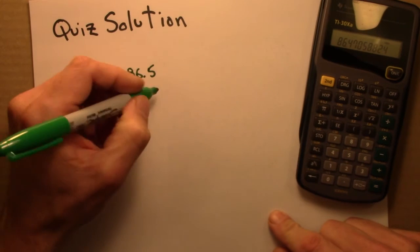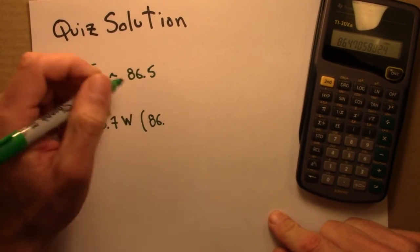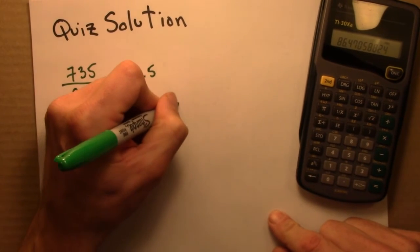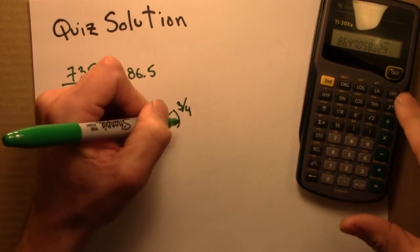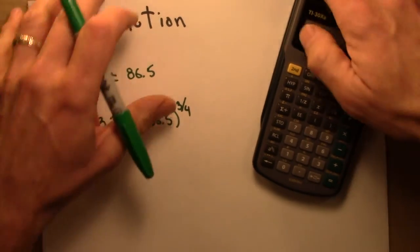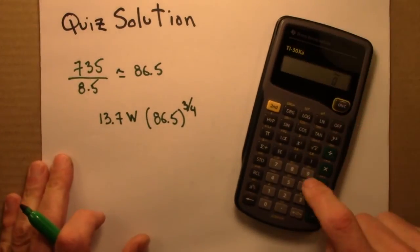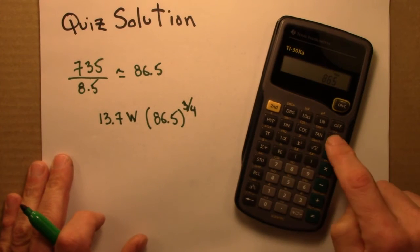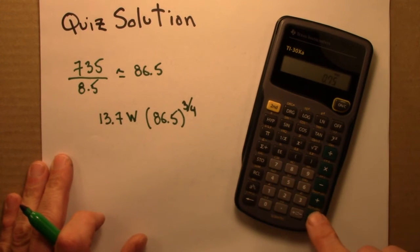Basal metabolic rate goes as mass to the three quarters. So let's evaluate this: 86.5 to the 0.75 gives me 28.4.